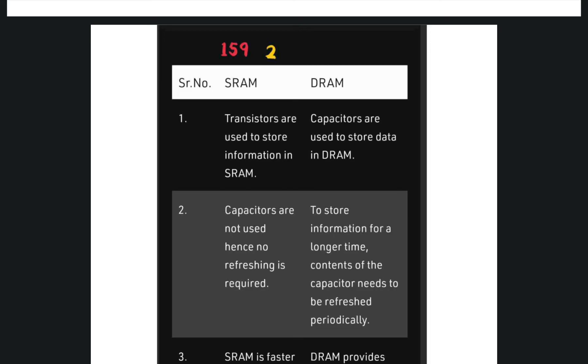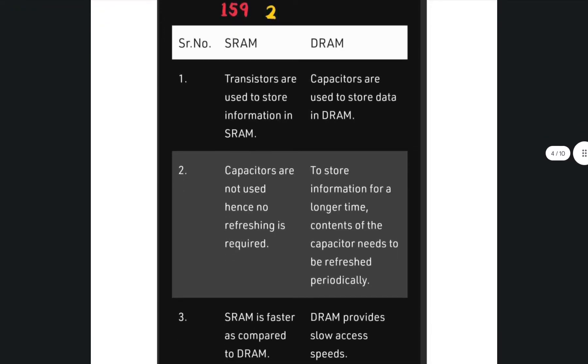So, here, transistors are used in SRAM for storing the information whereas in DRAM capacitors are used. Capacitors are not used.